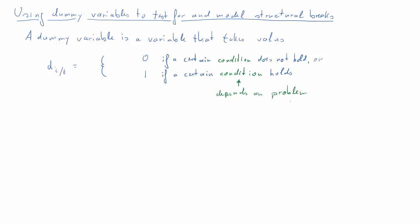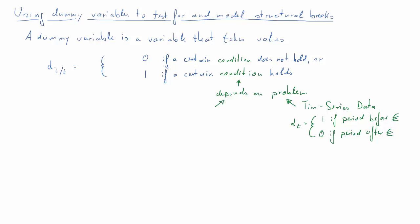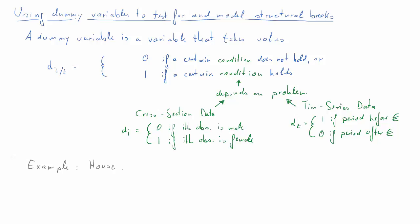The condition depends on the problem and can be used very flexibly. For time-series data, a variable d_t might take value 1 if a particular period is before the introduction of the euro, and 0 if the period is after. For cross-sectional data, a common example is a dummy d_i which is 0 if observation i is male and 1 if female. Here we will use a different example using house price data.